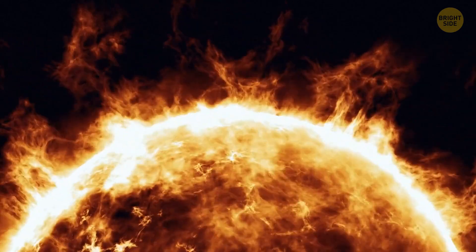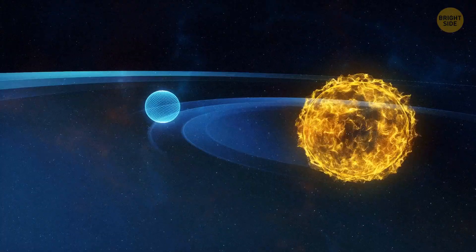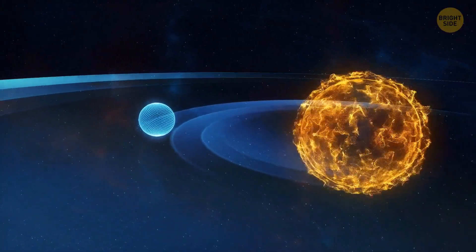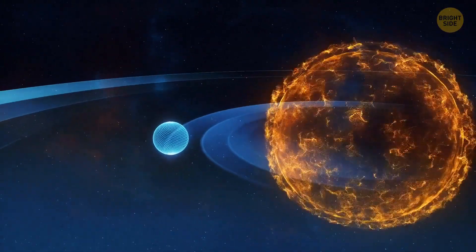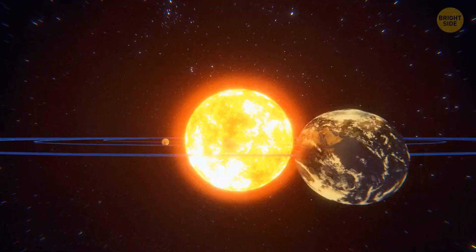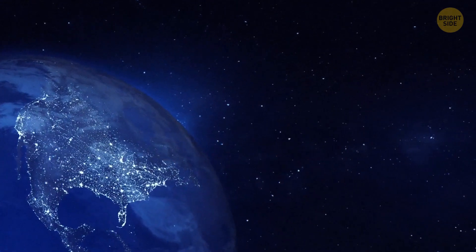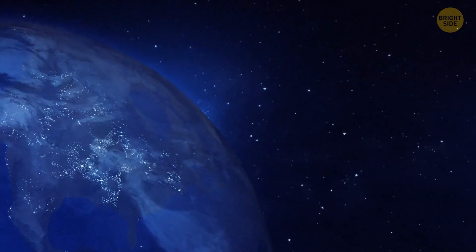Coronal mass ejections, or CMEs, are large bubbles of ionized gas. They tore through our orbit back then. If they had caught our planet in the crosshairs, we would have literally been in the firing line. We'd have faced solar matter hurtling towards Earth, damaging computers and causing power outages that would have lasted for months.